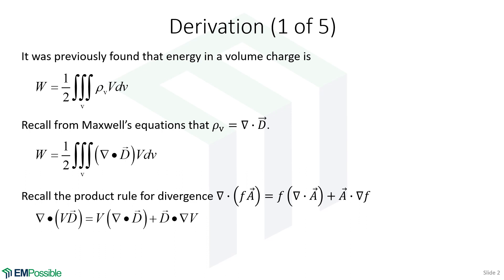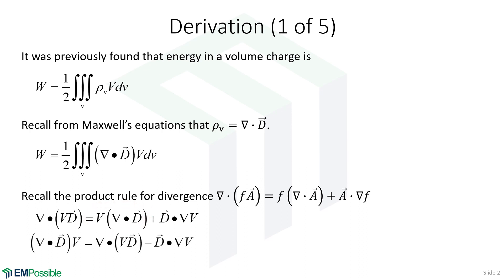There's a general rule in vector calculus — the product rule for divergence. If we have the divergence of some scalar times a vector, we can expand it. Writing this product rule in terms of the parameters we have, this second term is really the same as the argument in our integral. We move V to the other side and solve the product rule for that term, which is the argument in our volume integral above.